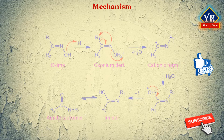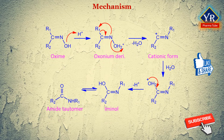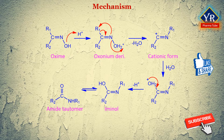Reaction mechanism. The hydroxyl group of the oxime is initially protonated upon treatment with protic acid to give an oxonium derivative, which can easily lose a water molecule.